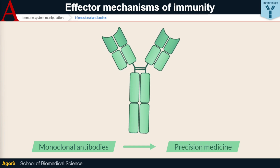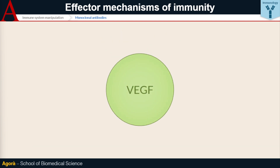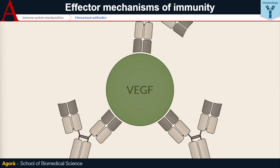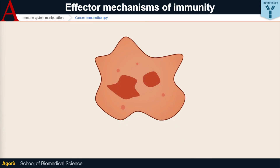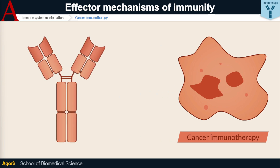For example, the discovery of the vascular endothelial growth factor pathway and its implications on different neoplasms has led to the development of anti-VEGF antibodies that can hinder cancer growth by blocking this intracellular cascade. Finally, the discovery of the close relationship between the immune system and cancer development has resulted in the rise of a new frontier of biomedical research — cancer immunotherapy. Understanding the mechanisms through which cancer cells elude immune control has led, for example, to the invention of anti-PD-1 monoclonal antibodies, which can mobilise T cells against cancer.